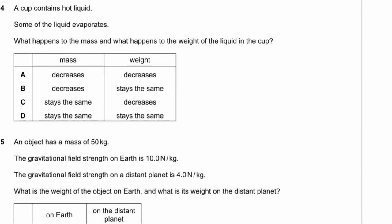Question 4. A cup contains hot liquid and some of it evaporates. There will be less liquid in the cup, which means less mass. Weight equals mass times gravity, so less mass means less weight. Mass decreases and weight decreases. The answer is A.